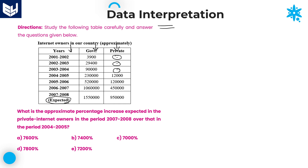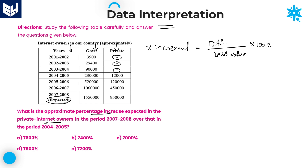Now, if you look at the first question: what is the approximate percentage increase expected in the private internet owners? We need to calculate percentage increment, which is the difference between those two values divided by the lesser value, multiplied by 100. We are talking about private internet owners in the period 2007 to 2008 over the period 2004 to 2005.